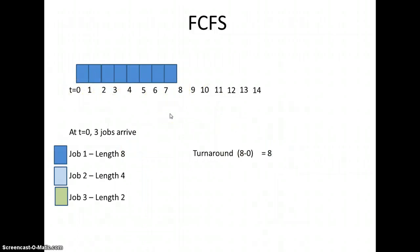Then job two, which has a length of four, will now run. It runs through its four cycles. Remember, it arrived at zero here, it finishes here at twelve, so twelve minus zero is twelve, and so the turnaround time for that one is twelve.